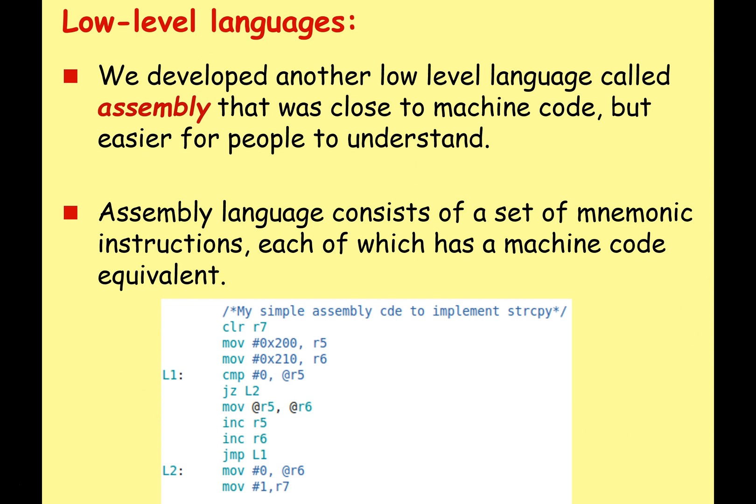Because of that, we developed languages easier for us to understand. One of the very first was called assembly. Assembly is still close to machine code and is a very low-level language, but it is easier to understand. Assembly language consists of a set of mnemonic instructions, each of which has a machine code equivalent. So instead of operands being ones and zeros, we use mnemonics like MOV, CLR, JMP, etc. These have a one-to-one relationship with a binary opcode. Because it uses letters and short words rather than ones and zeros, it's a bit easier to understand.